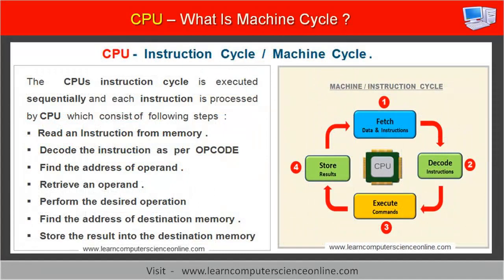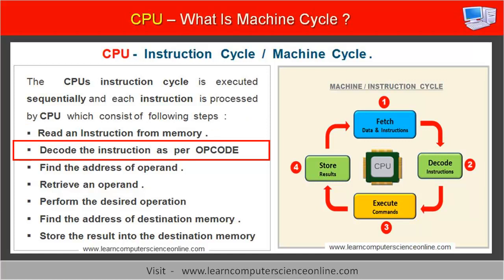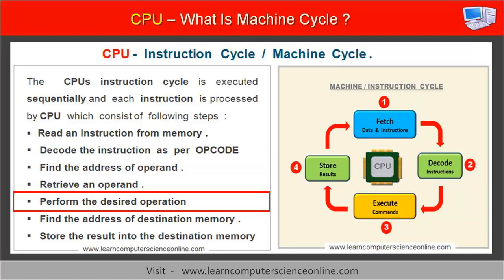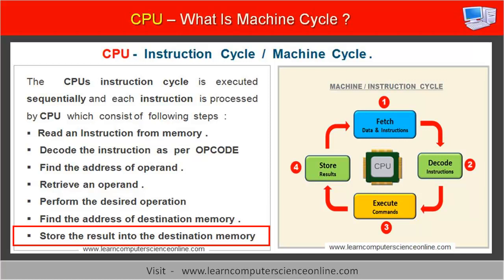The instruction cycle consists of the following sequence of steps. First, read the instruction from the memory. Second, decode the instruction. Third, find the address of the operand. Fourth, retrieve the operand from the memory. Fifth, perform the desired operation on the operand. Sixth, find the address of the destination memory. And finally, store the result into the destination memory.